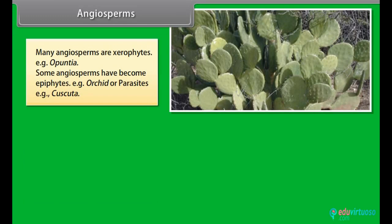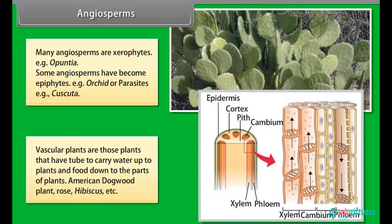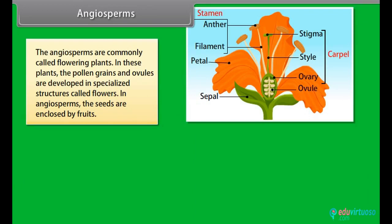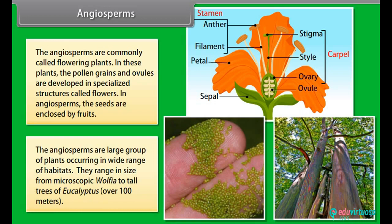Some angiosperms have become epiphytes, for example orchids, or parasites, for example Cuscuta. Vascular plants are those that have tubes to carry water up to plants and food down to the parts of plants — examples include American dogwood, rose, and hibiscus. The angiosperms are commonly called flowering plants; in these plants the pollen grains and ovules are developed in specialized structures called flowers. In angiosperms, the seeds are enclosed by fruits. The angiosperms are a large group of plants occurring in a wide range of habitats, ranging in size from microscopic Wolffia to tall trees of Eucalyptus over 100 meters.